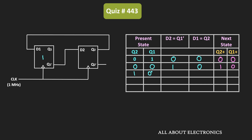Since Q1 is equal to 0, D2 will have input 1. And D1 is the same as Q2, which is 1, so D1 will also be 1. For the next clock pulse, the inputs to the flip-flops are 1 and 1. Therefore, at the next clock pulse, the output of the two flip-flops will also be equal to 1 and 1.